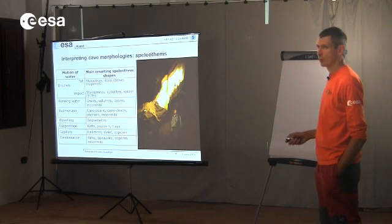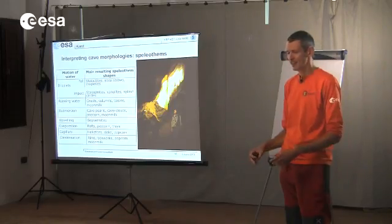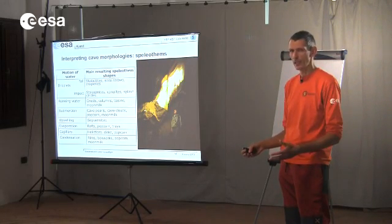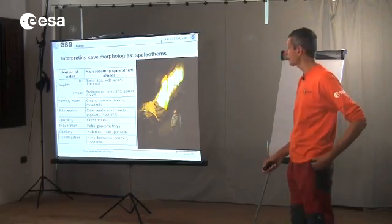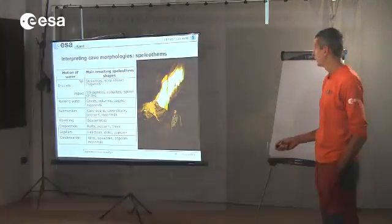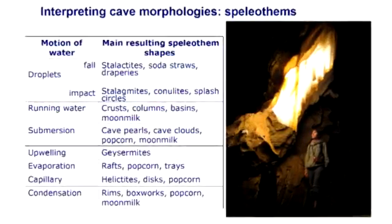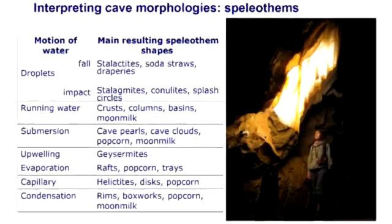The most typical speleothem is formed by droplets. A droplet comes out from the vault of the cave, loses CO2, deposits calcium carbonate, and then falls down. It falls on the ground, loses more CO2, and forms a stalagmite. On the roof we have stalactites hanging down and stalagmites below growing upwards. Stalactites have a hole in the middle — a feeding tube — while stalagmites are completely compact. If you find them broken you can understand the difference; the shape is also different.